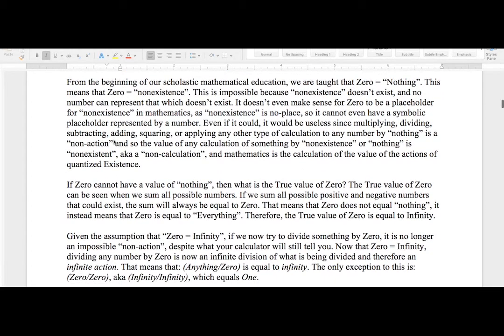In order to see why, we must first challenge some of our most basic understandings of algebra and math in general. From the beginning of our scholastic mathematical education, we are taught that zero equals nothing. This means that zero equals non-existence. This is impossible because non-existence doesn't exist, and no number can represent that which doesn't exist. It doesn't even make sense for zero to be a placeholder for non-existence in mathematics, as non-existence is no place, so it cannot even have a symbolic placeholder.